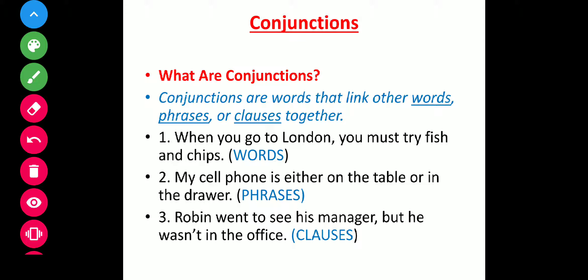For example: 'When you go to London, you must try fish and chips.' Here, 'fish' is a word and 'chips' is a word — so 'and' is the conjunction joining them. This word is called a conjunction.